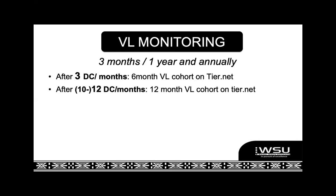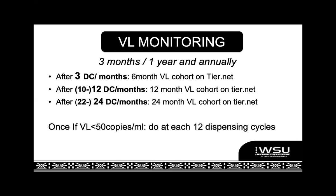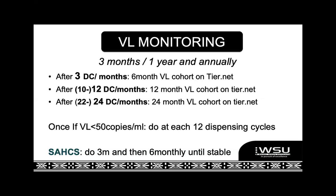For CCMDD, the guidelines actually talk about picking up three months of treatment at a time — I know here it's often just a two-month option given. But if you need to do a viral load or creatinine in three months, give patients three months of treatment in one go. There's absolutely no point in them queuing for one little bottle every month or two months. Once the viral load is less than 50, it's every 12 dispensing cycles — so if it's March this year it may fall in February next year. The HIV Clinician Society does a viral load at three months and then six-monthly until the viral load is stable.